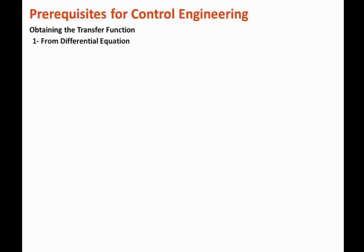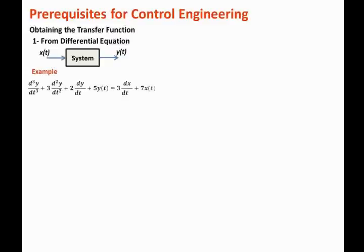In the first method, the transfer function is obtained directly from the differential equation. For example, if we have a system where the input signal is defined as x of t and the output signal is defined as y of t, and the system is described by this differential equation: the third derivative of the output plus three times the second derivative plus two times the first derivative plus five times the output equals three times the first derivative of the input plus seven times the input itself.